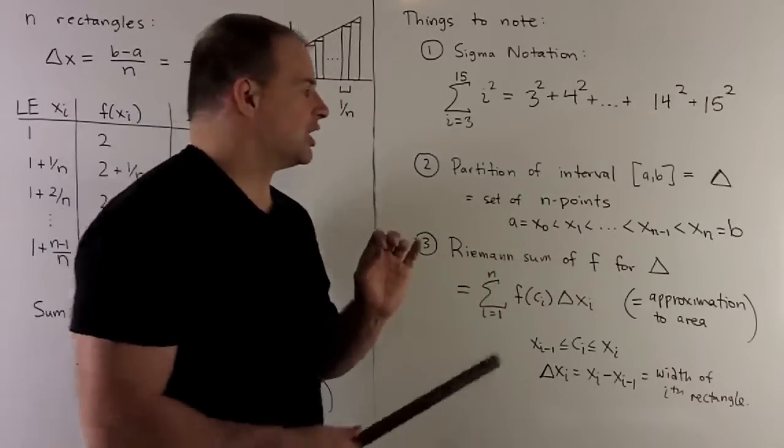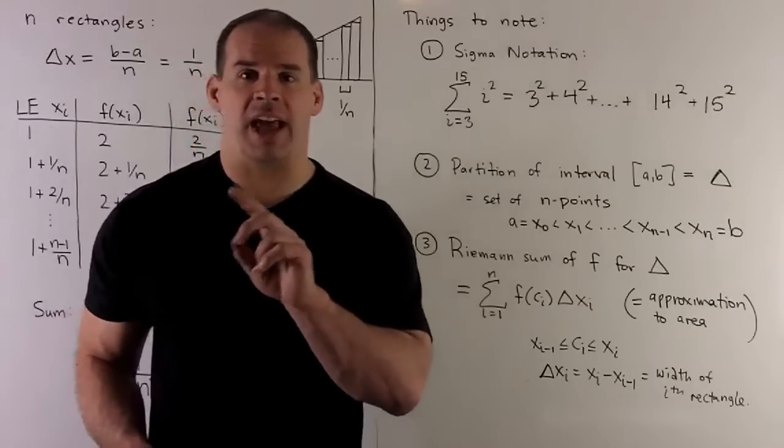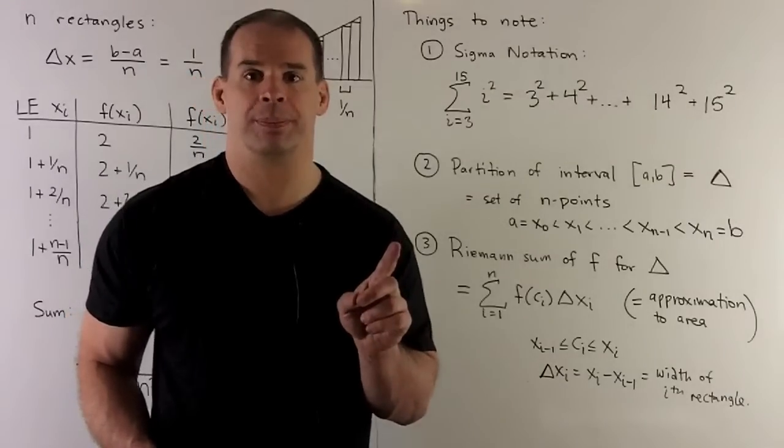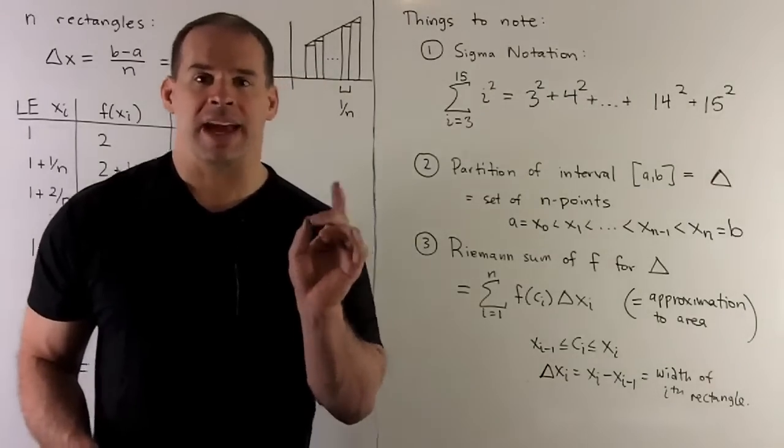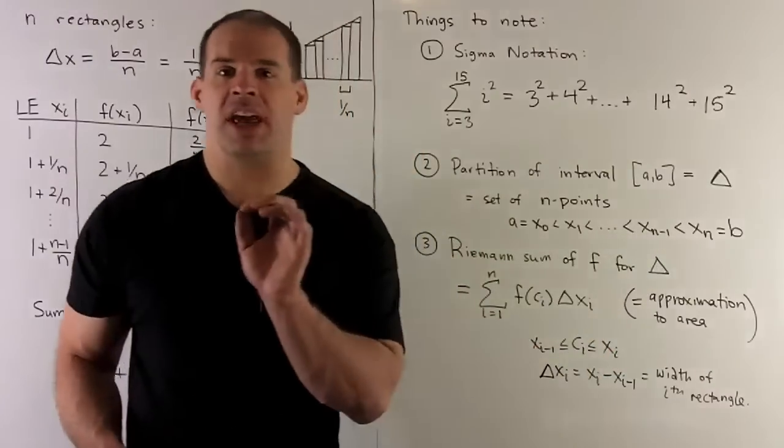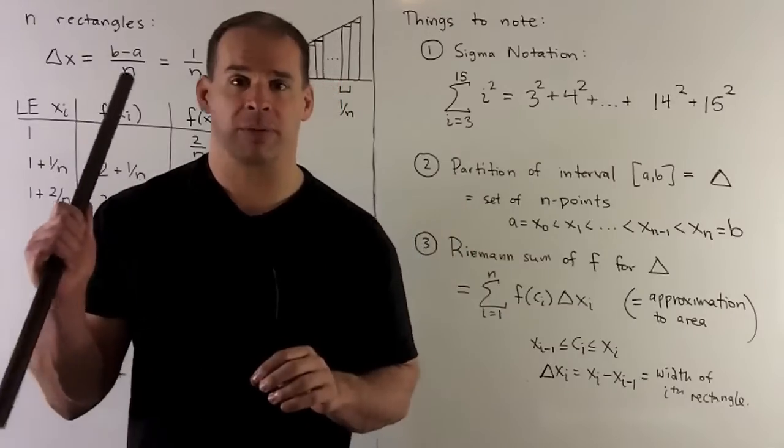So, in general, a partition doesn't have to be uniformly spaced. You're just going to take any old subset of points that contains your endpoints. Now, the idea is, when I have a partition, that's going to tell you the bases of the rectangles in the process from before.